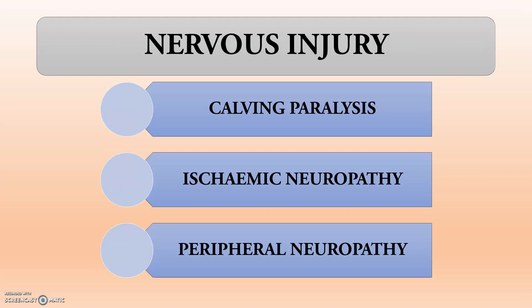The third differential is nervous injury — that is calving paralysis, which is very common in the first pregnancy. It may also be called obturator paralysis, because the obturator nerve is damaged due to fetal-maternal disproportion. The other types include ischemic neuropathy and peripheral neuropathy. The second and third types are not common in cattle, whereas calving/obturator paralysis is very common in primiparous animals.